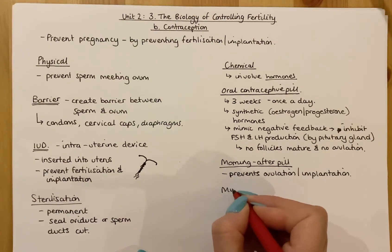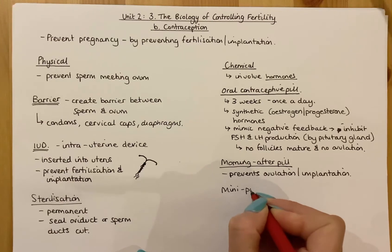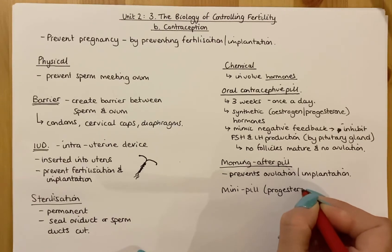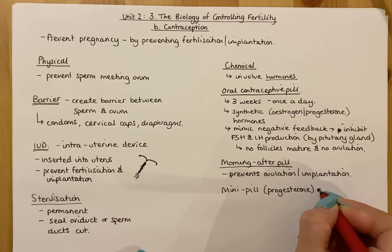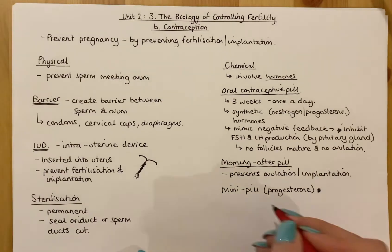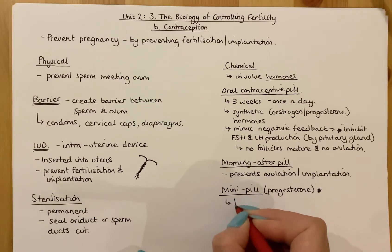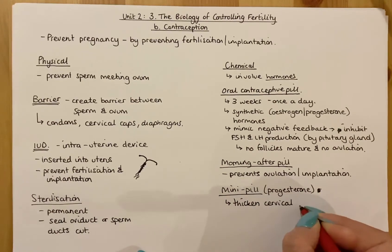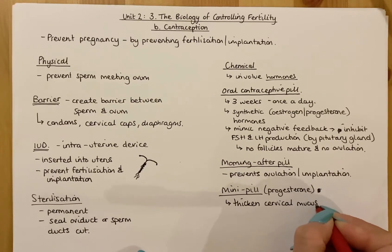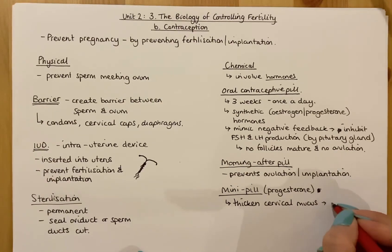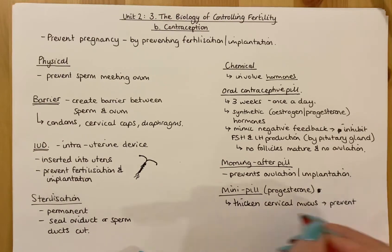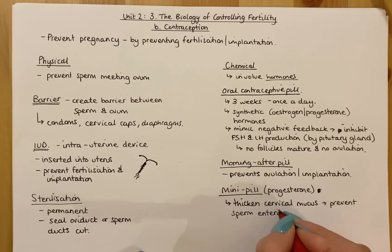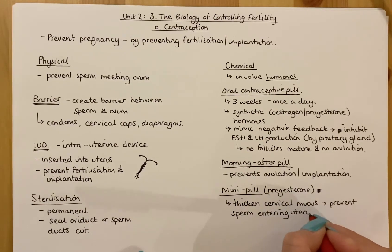The mini pill contains progesterone only. Its purpose is to thicken the cervical mucus — as discussed in the hormonal control section — and if that cervical mucus is thicker, it prevents sperm from entering the uterus. If sperm can't enter the uterus, they can't reach the oviduct to allow fertilization to occur.